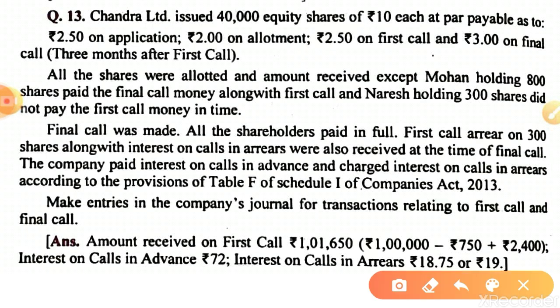Chandra Remitted issued 40,000 shares at rupees 10 each at par. The call schedule is: ₹2.5 on application, ₹2.5 on allotment, ₹2.5 on first call, and ₹3 on final call, which is made 3 months after the first call. The date is not mentioned but they have mentioned that the final call is made after 3 months of the first call.